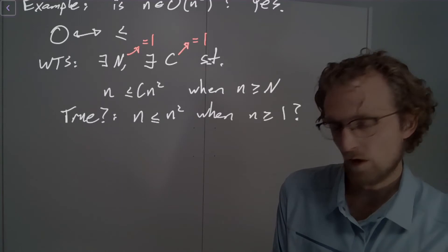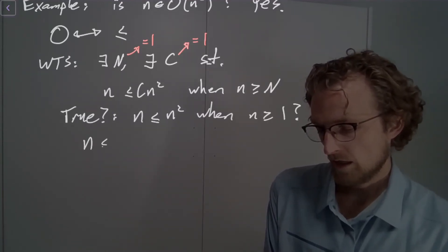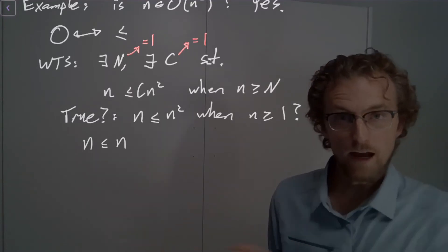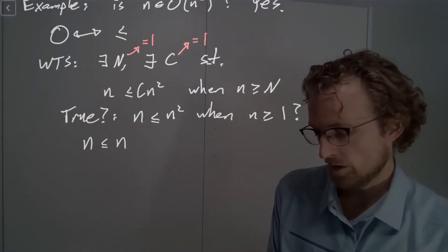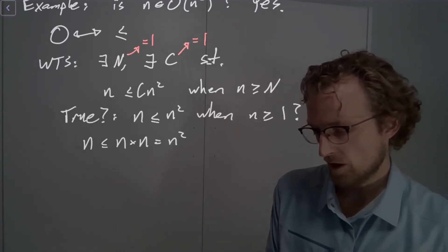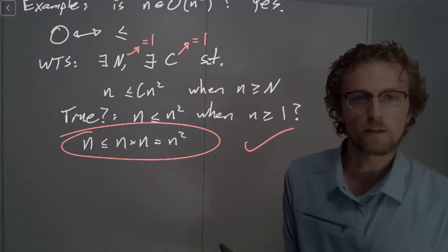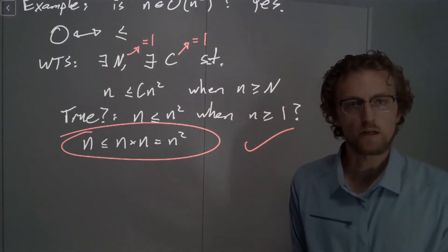Is it true that n is less than or equal to n squared when n is greater than or equal to 1? Of course it's true. When n is greater than or equal to 1, what do I have? I have that n is less than or equal to n times itself, because itself is greater than or equal to 1, and that's just equal to n squared. And so there's our inequality that we wanted to show. So there we go. We showed something that felt quite obvious, but we actually showed it in a formal way.